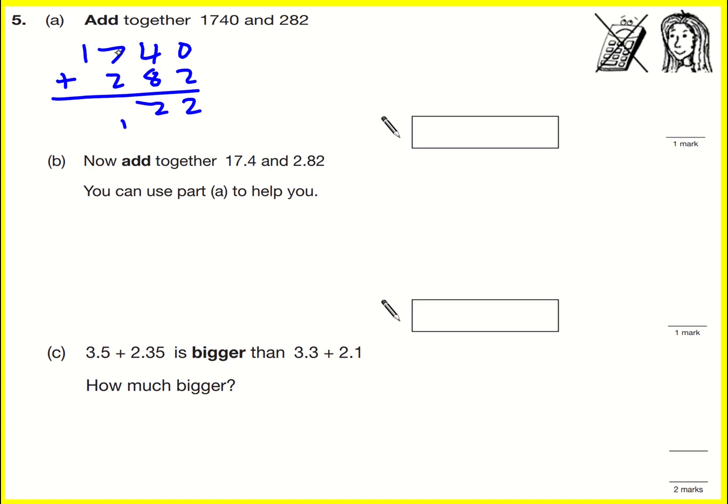9 plus, sorry, 7 plus 2 is 9, add the 1, 10, so 0 carry the 1. 2,022 is the answer.